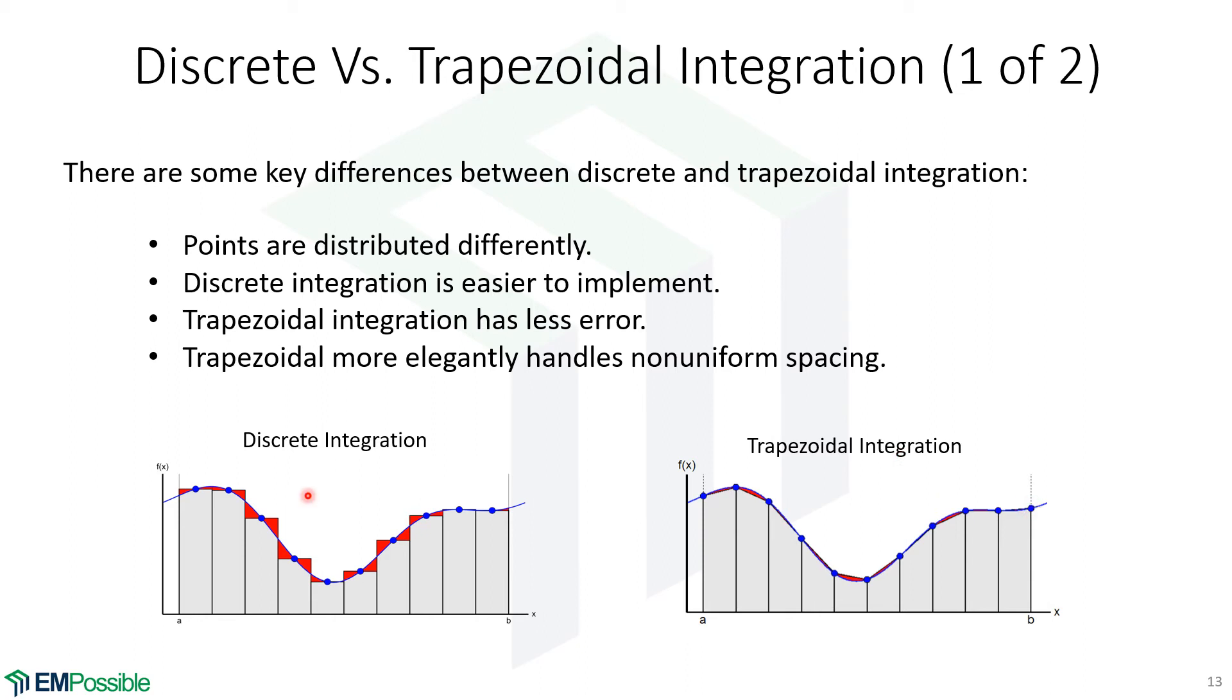In discrete integration, we have the same number of points as we have rectangles. In trapezoidal integration, we have one more point than we have trapezoids. One might say that discrete integration is easier to implement because we simply just add up all these function values and multiply by delta X. Trapezoidal integration, we could argue, has a lot less error, and we can see that by less red here. And we can also say that trapezoidal integration a bit more elegantly handles a non-uniform grid.